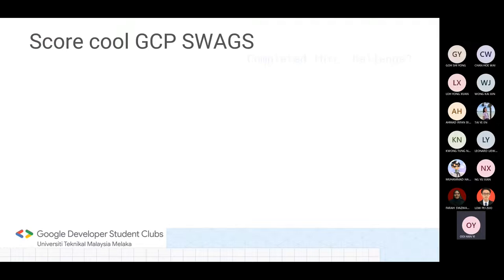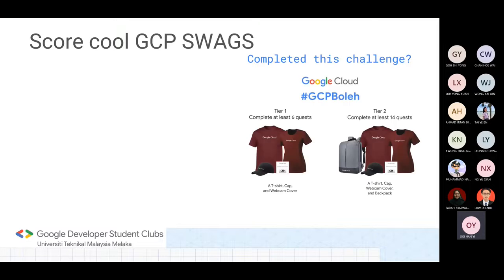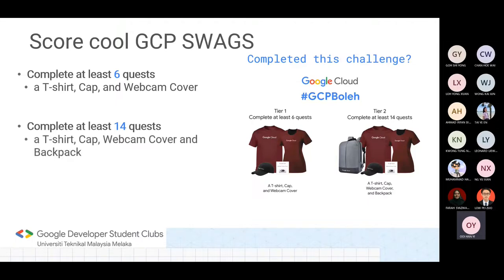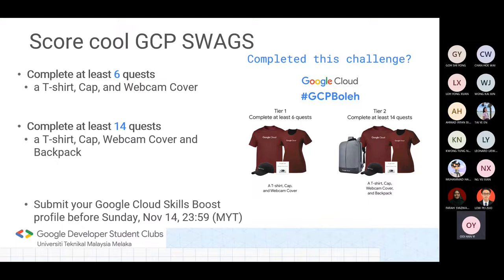Complete any lab inside the quest 'Insights from Data with BigQuery' and you will get your monthly subscription. After completing a number of quests, you can claim your swag on the official GCP Boleh website. If you complete at least 6 quests, you can claim a T-shirt, cap, and webcam cover. If you complete at least 14 quests, you get all of that plus a backpack. Remember to submit your Google Cloud Skill Boost profile before November 14th.